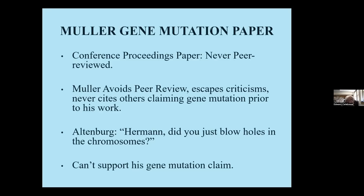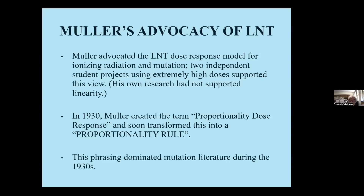Even if the work was of Nobel Prize quality, it never would have been published as-is — it would have been thrown back at him to conform to standards. Muller avoided peer review, escaped criticism, and never cited the works of others on gene mutation prior to his own work — including claims of gene mutation six months before his own, published in the Proceedings of the National Academy of Sciences by two New York area geneticists. Even Muller's best friend, Edgar Altenburg, asked him: 'Herman, did you just blow holes in the chromosomes? What's your proof?'